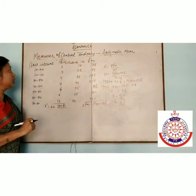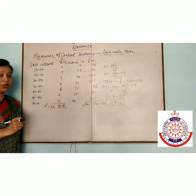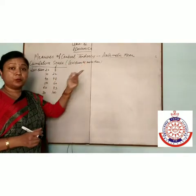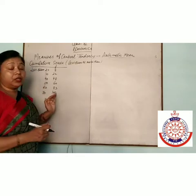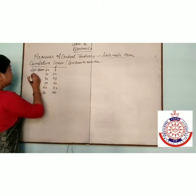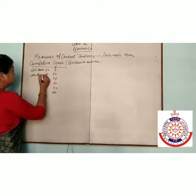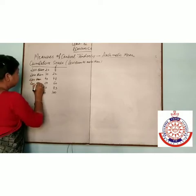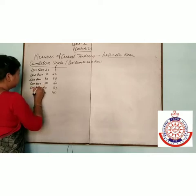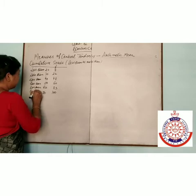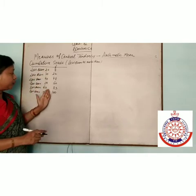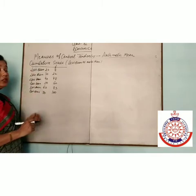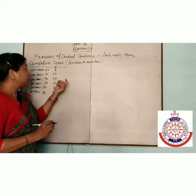We can easily find the missing frequency in continuous series. Sometimes a cumulative series is given — it may be a less-than or more-than series. Here we discuss the less-than series: less than 20, less than 30, less than 40, less than 50, less than 60, and less than 70, with cumulative frequencies given. In arithmetic mean calculation, first convert the less-than series into an interval series.